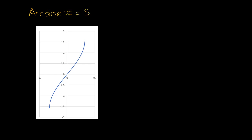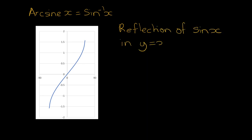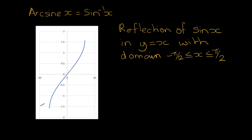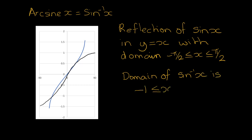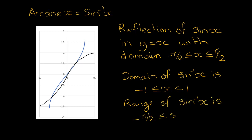Arcsine is another way of saying sine to the minus one x. This is the graph of arcsine x, and it is a reflection of the sine x graph in y equals x, where sine x has its domain restricted to between minus pi over 2 and pi over 2. So the domain of arcsine x is between minus 1 and 1, and the range of arcsine x goes between minus pi over 2 and pi over 2.